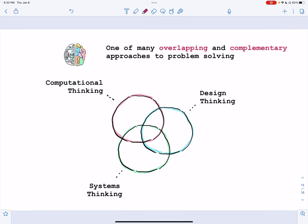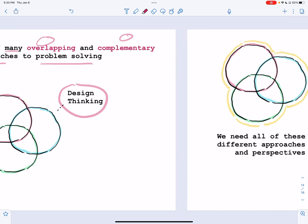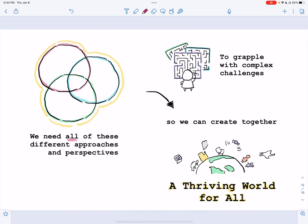Finally, I want to say that computational thinking is one of many overlapping and complementary approaches to problem solving. Other approaches include design thinking, systems thinking, and there are many. And we need all of these different approaches and different perspectives if we want to grapple with the complex challenges presented to all of us in this brave new world so we can together create a thriving world for all.